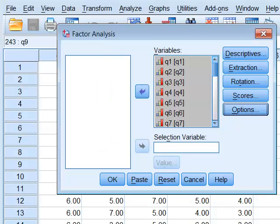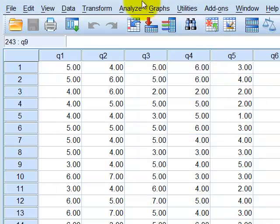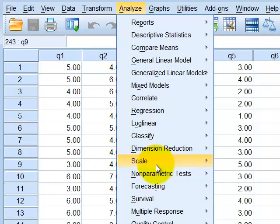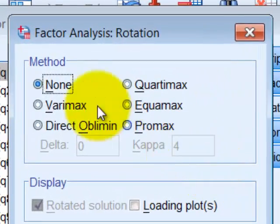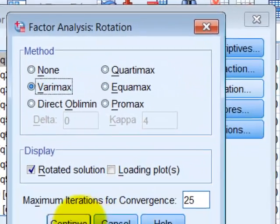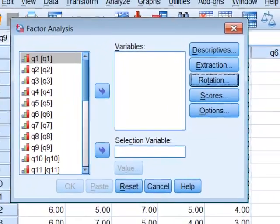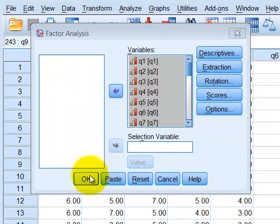So let's do that. You're going to get a lot of repeated data. Analyze, Dimension Reduction, Factor. The only thing you're going to change is the rotation to Varimax. Click Continue. Click OK.